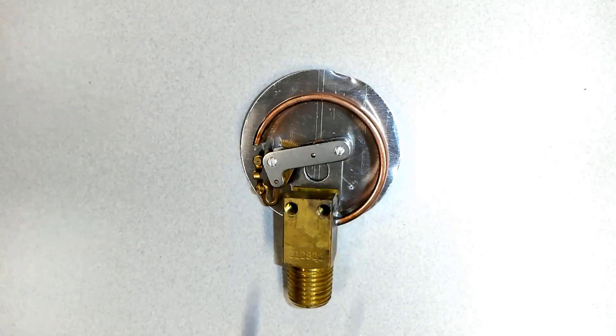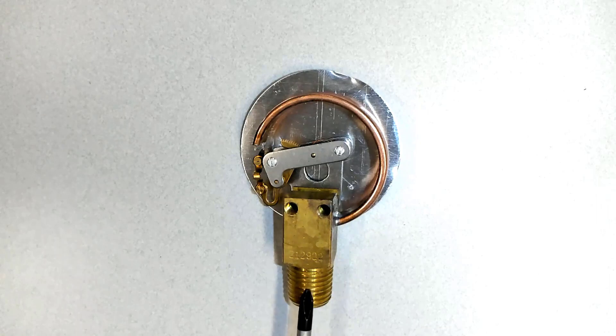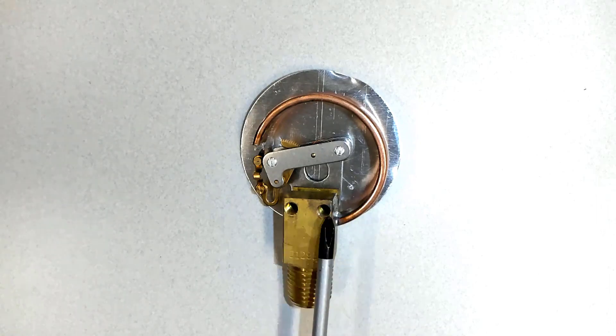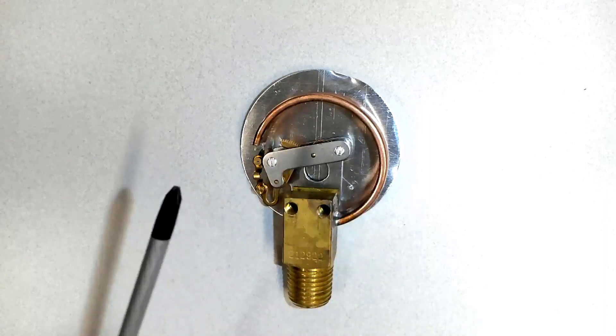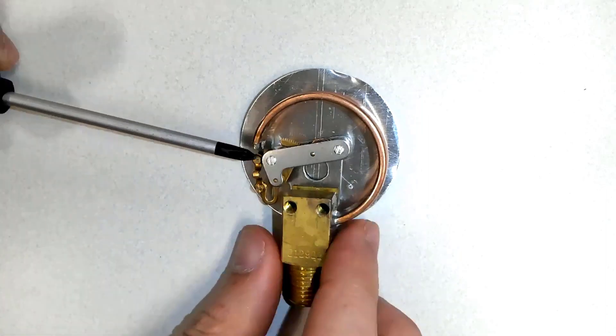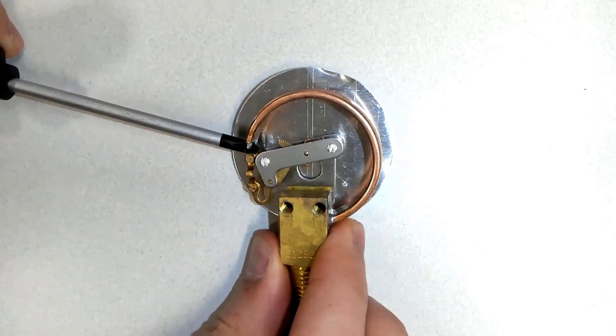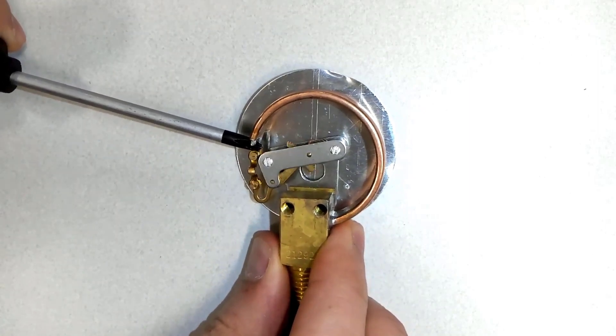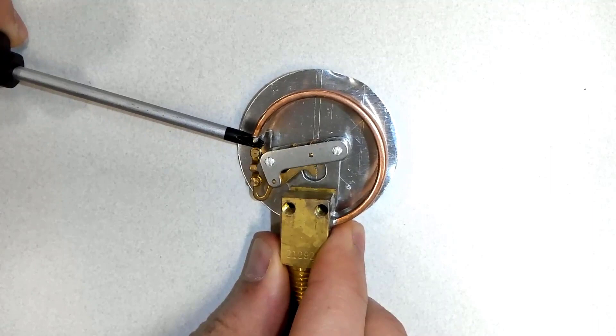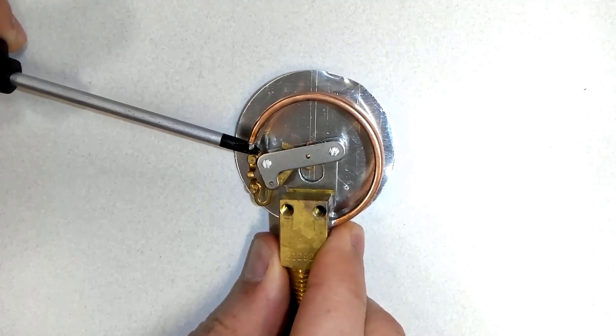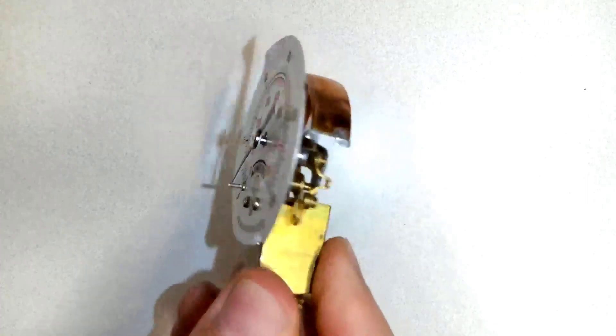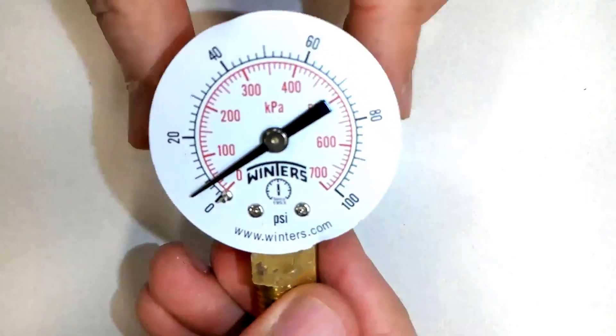Water or fluid goes inside the socket, then into your C-shaped Bourdon tube, and tries to straighten the tube. As it gets straightened, the gear comes into contact with the pinion, which is connected to the pointer.